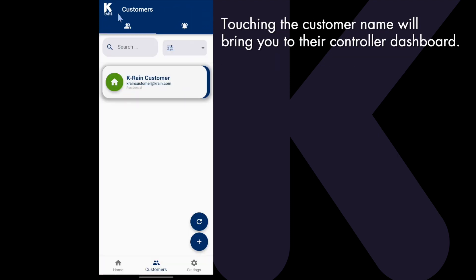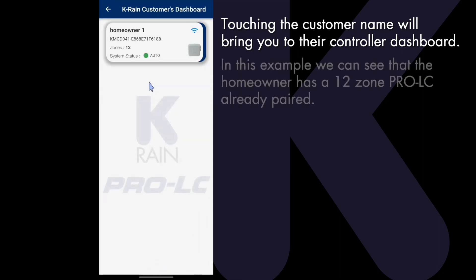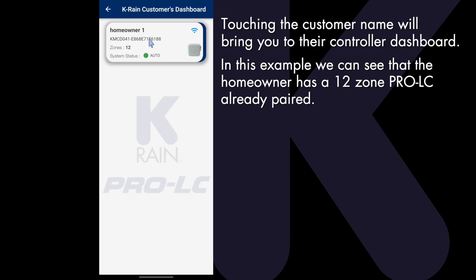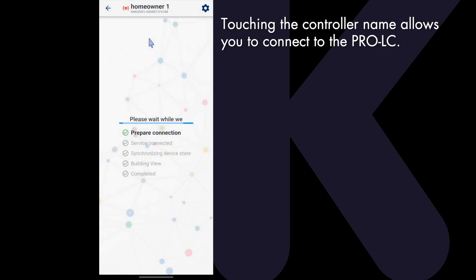Go back to your customer list. Touching the customer name will bring you to their Pro-LC controller. In this example, we can see that the homeowner has a 12-zone Pro-LC already paired. Touching the controller name will connect to the Pro-LC.